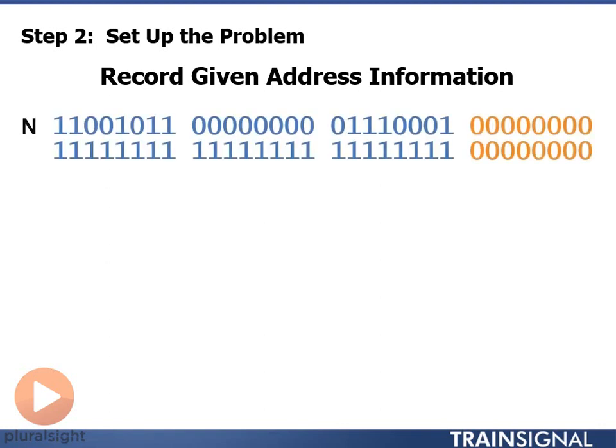So we record our given address information first. We need to know what the network address and subnet mask was that our internet service provider gave us. Once we write this down that becomes our baseline for the rest of our calculations.